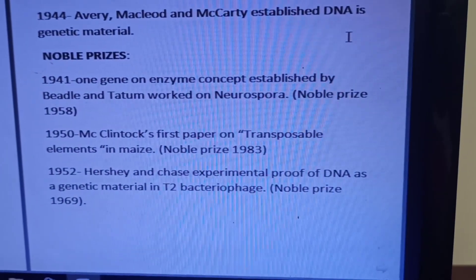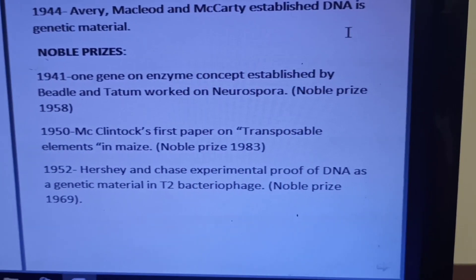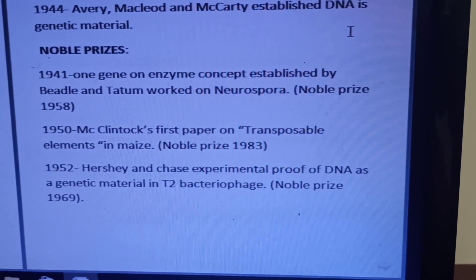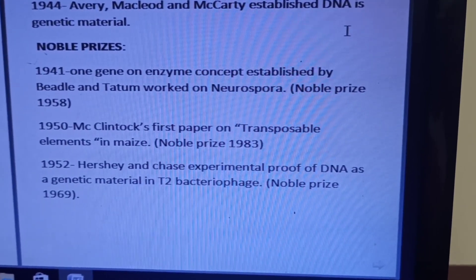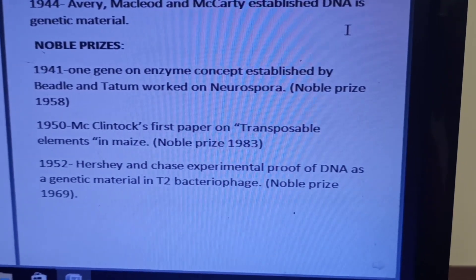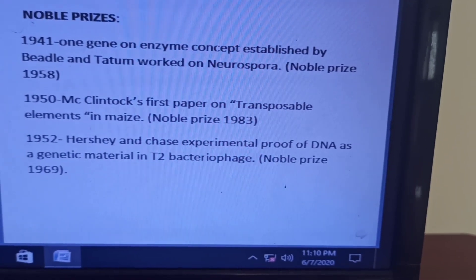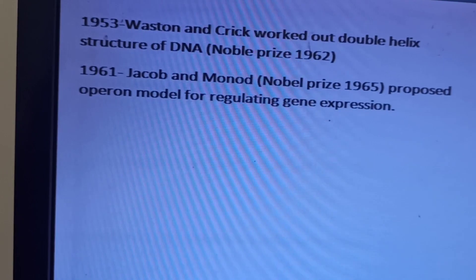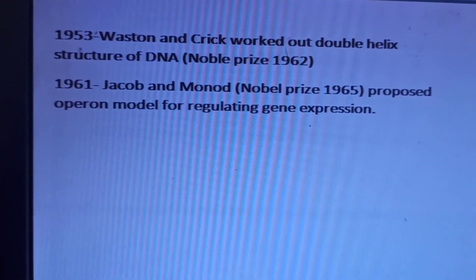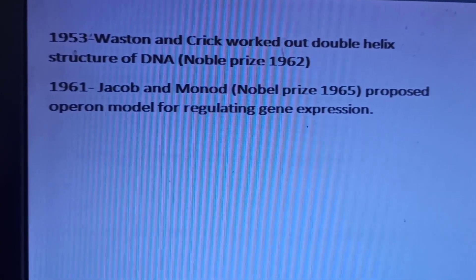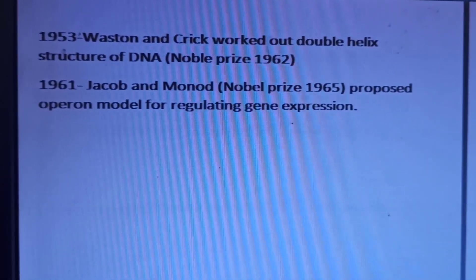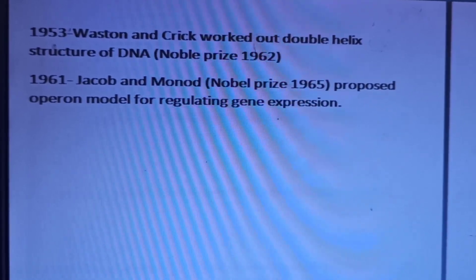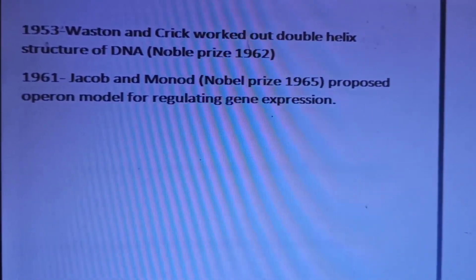Some Nobel prizes: In 1941, Beadle and Tatum established the one gene–one enzyme concept by working in Neurospora and received the Nobel prize in 1958. In 1950, McClintock's first paper on transposable elements in maize — a very frequently asked question. In 1952, Hershey and Chase provided experimental proof of DNA as genetic material using T2 bacteriophage — Nobel prize in 1969. In 1953, Watson and Crick worked out the double helix structure of DNA — Nobel prize in 1962. In 1961, Jacob and Monod proposed the operon concept for regulating gene expression — Nobel prize in 1965.